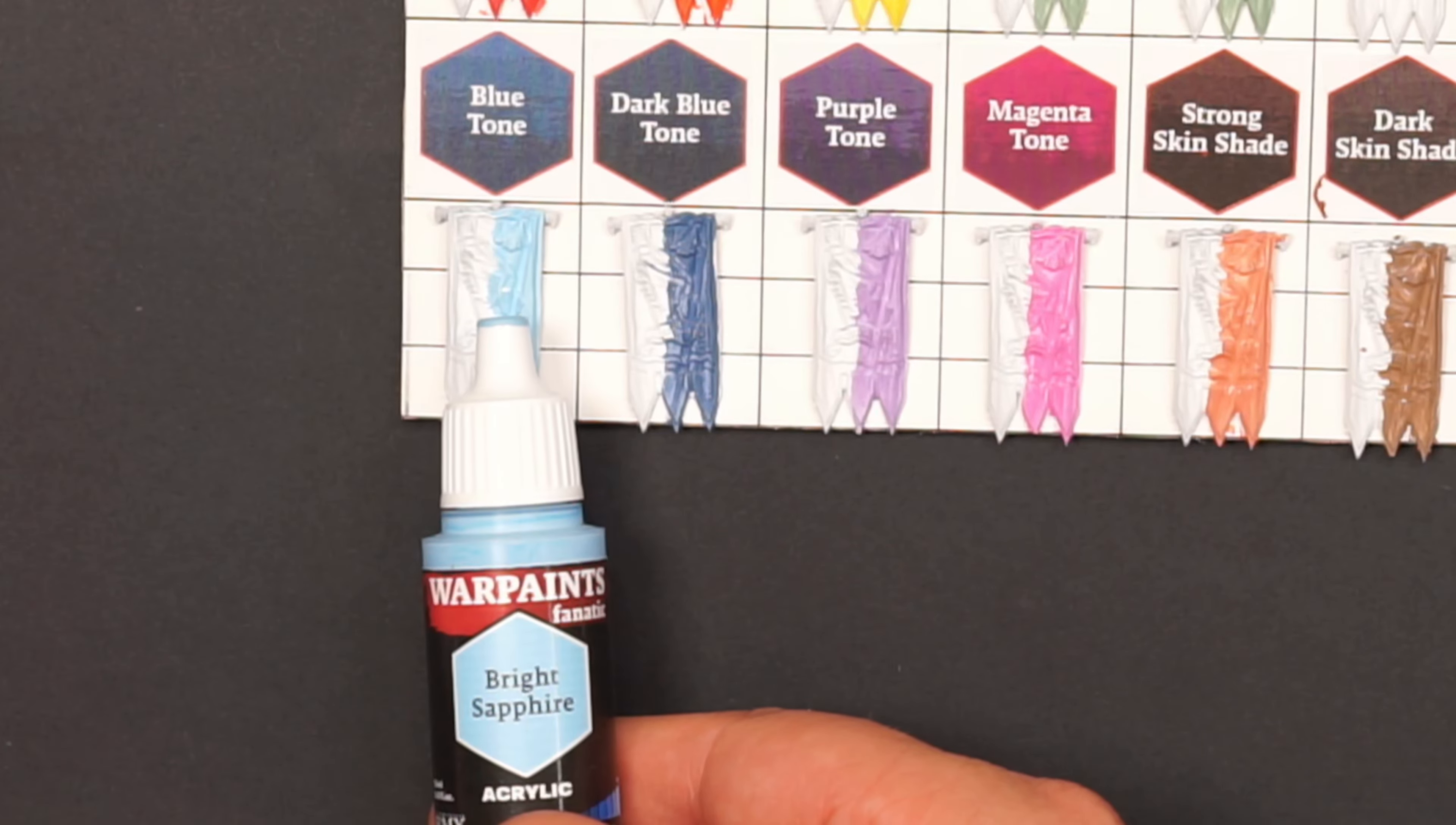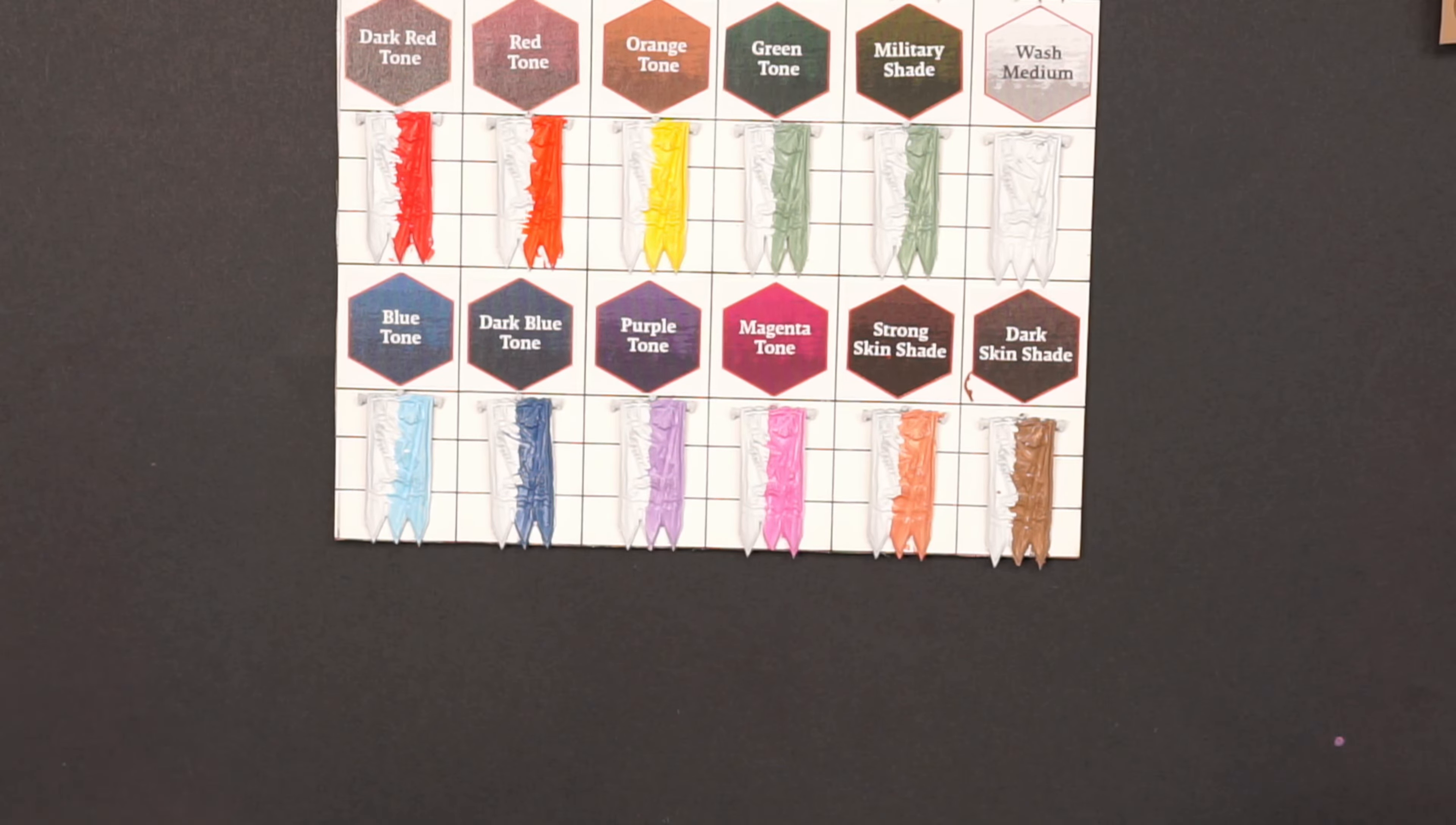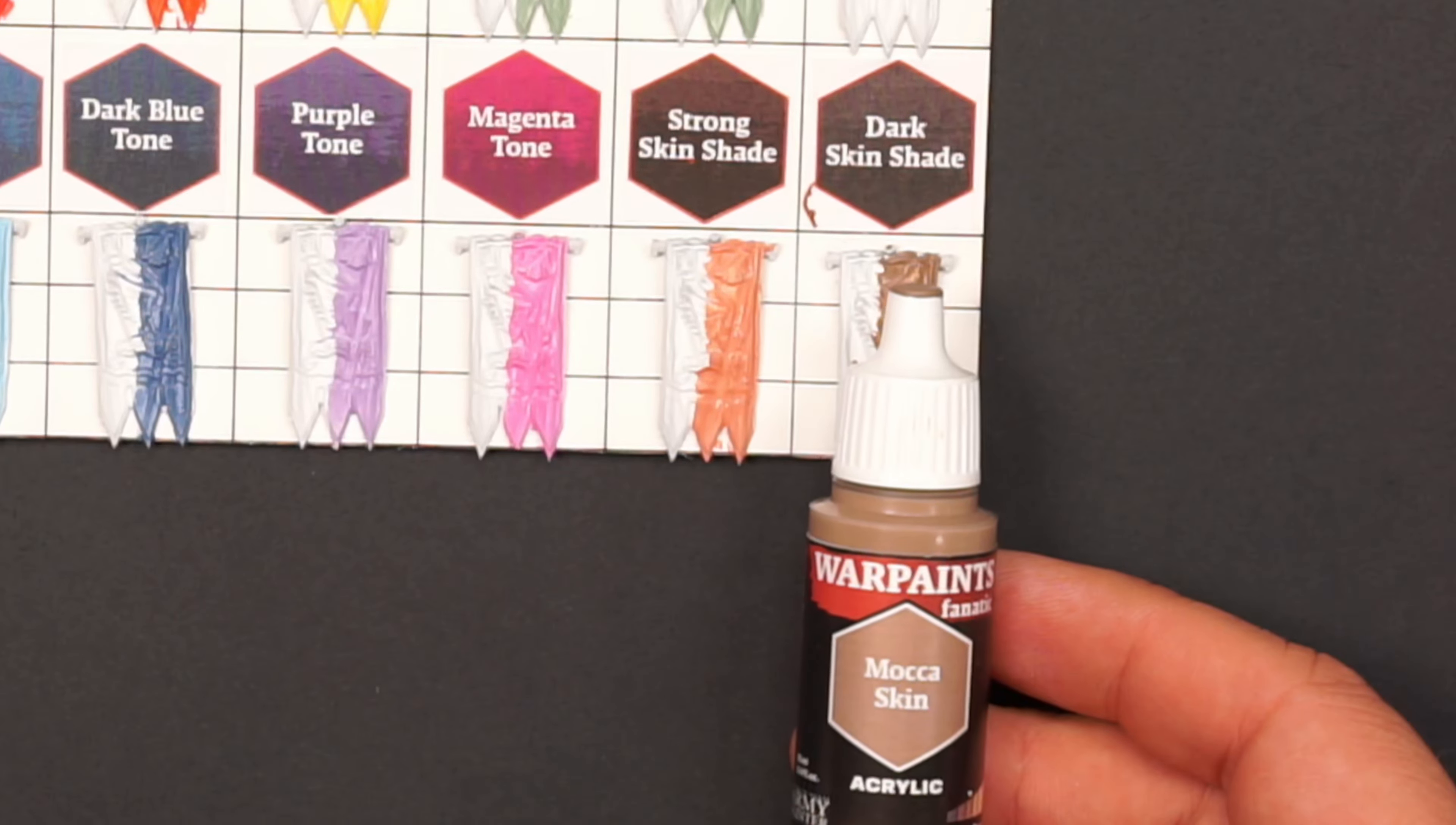The bright sapphire for the blue tone, and the stratus blue for the dark blue tone. For the purple tone I used this hexed violet. And we need some pink magenta for the magenta tone, and this was the pixie pink. And then I used the agate skin for the strong skin shade and the dark skin shade I used the mocha skin.